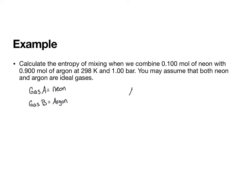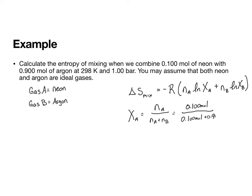And so we found that the delta S of mixing is equal to minus R times n_A LN of X_A plus n_B LN of X_B. And we also know that X_A is equal to moles of A divided by moles of A plus moles of B, which if we plug things in, we get 0.1 moles of neon divided by 0.1 moles of neon plus 0.9 moles of argon, giving us 0.1 X_A. And likewise, I can do the same thing with X_B.